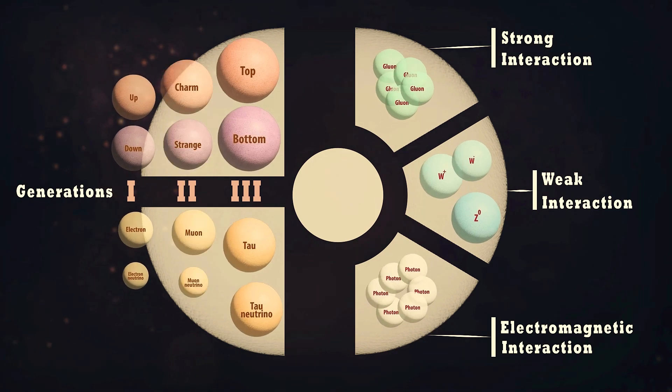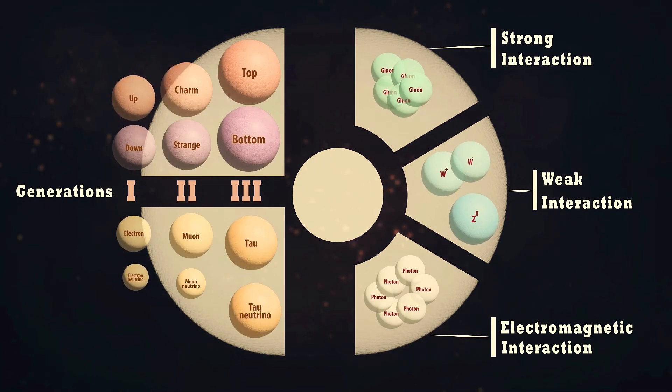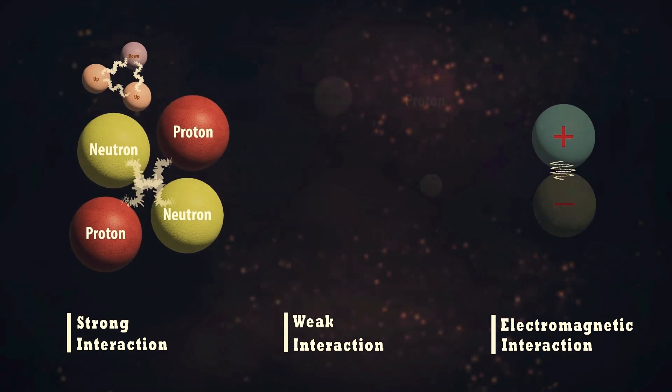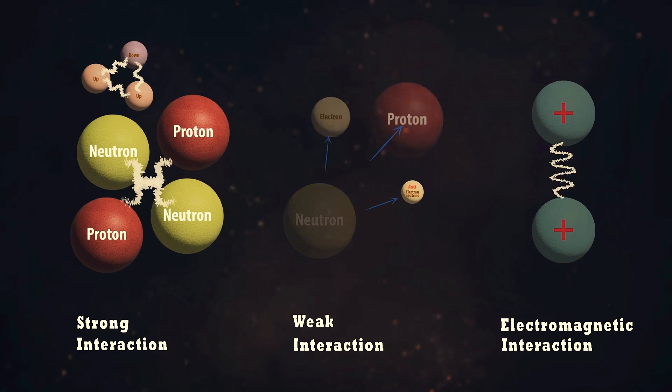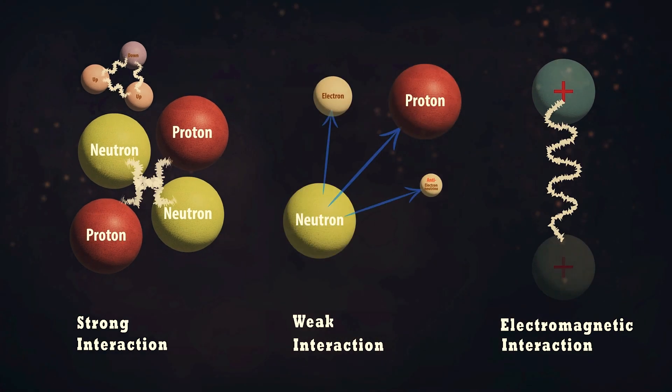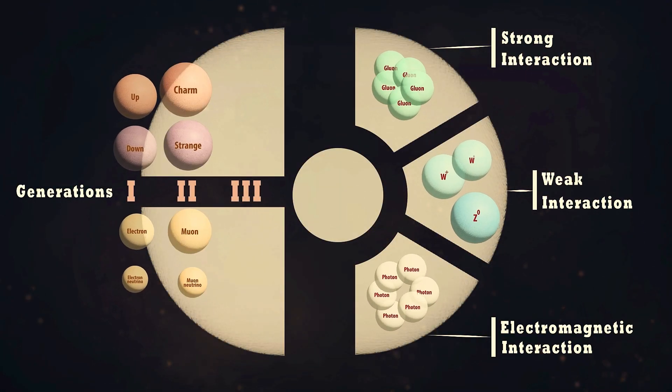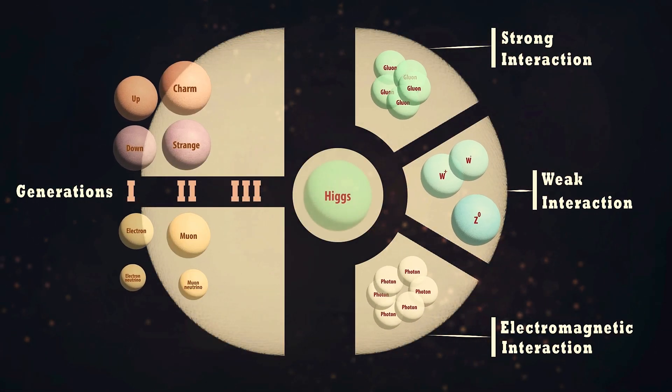The first generation is the most stable, and thus is the most commonly observed. The standard model includes three types of interactions: strong, electromagnetic, and weak. These forces are mediated by vector bosons.